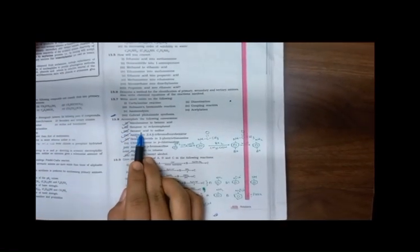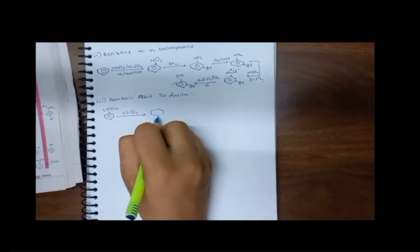The third reaction: convert Benzoic Acid to Aniline. First take Benzoic Acid and treat with SOCl2, which gives us Benzoyl Chloride.